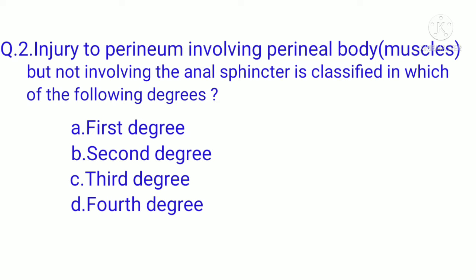Question 2: Injury to the perineum involving the perineal body muscles but not involving the anal sphincter is classified in which degree? The correct option is B, second degree. In first degree, injury occurs to perineal skin only. In third degree, injury involves the anal sphincter complex — both external and internal. In fourth degree, injury involves the anal sphincter complex and anal epithelium.